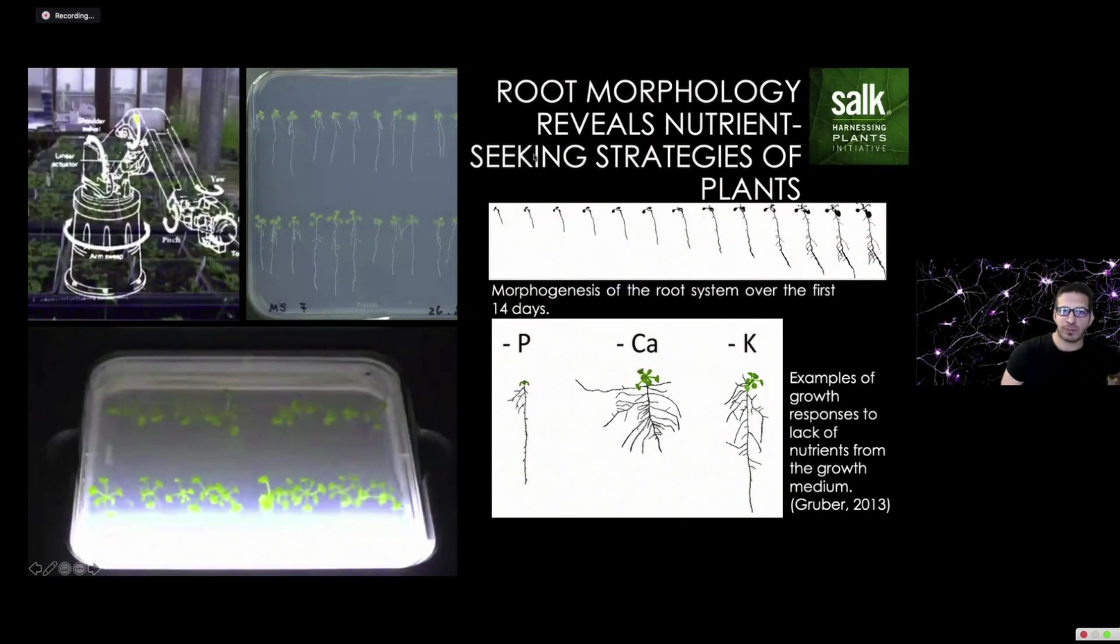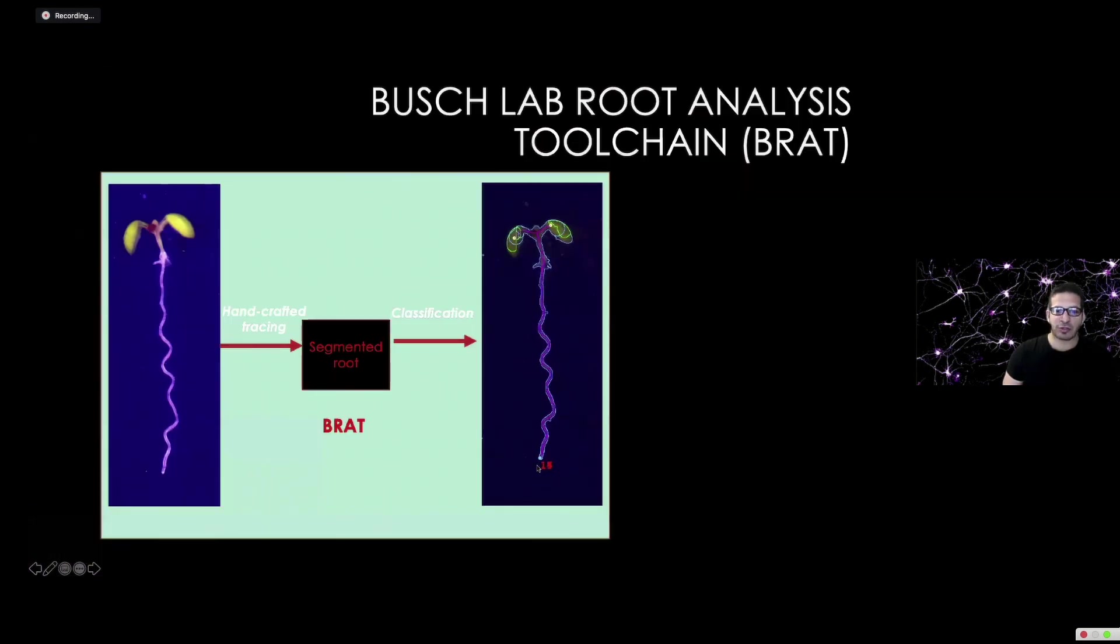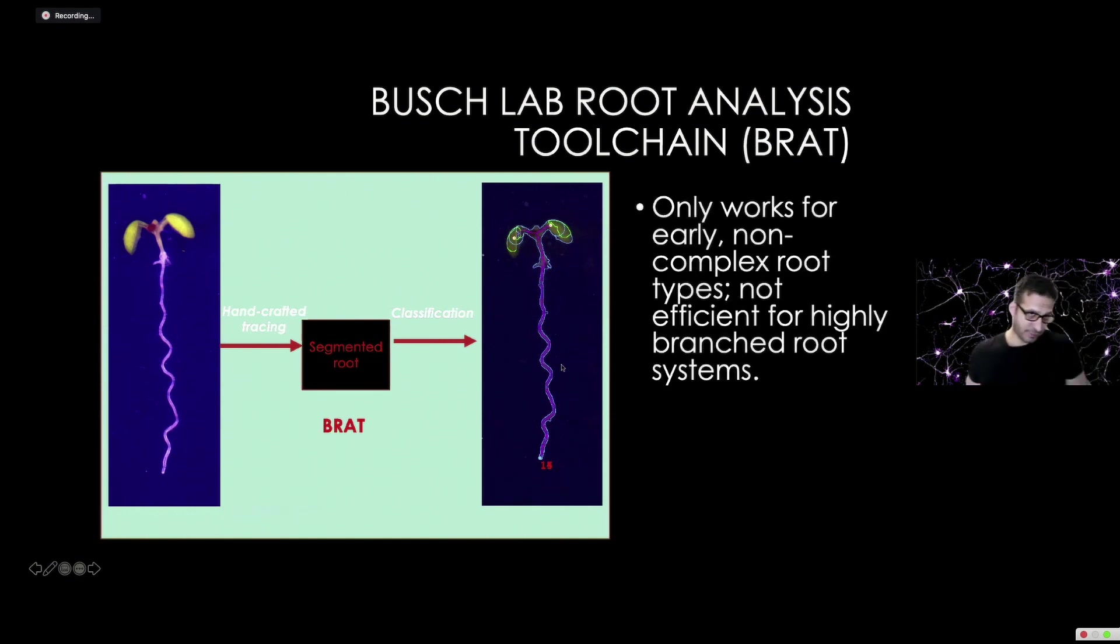In collaboration with the Bush Lab, we've developed this robot that can image thousands of root systems from many different plants from all over the world or from different genetic variations. Now we can get images of these different roots and understand how plants make better or worse roots. But to understand it, we need to convert these photos into diagrams where we can measure the length and properties of the roots. Wolfgang has developed a method using computers called BRAD. The problem is that it doesn't work so well with more complicated roots, which are the roots we want to study.